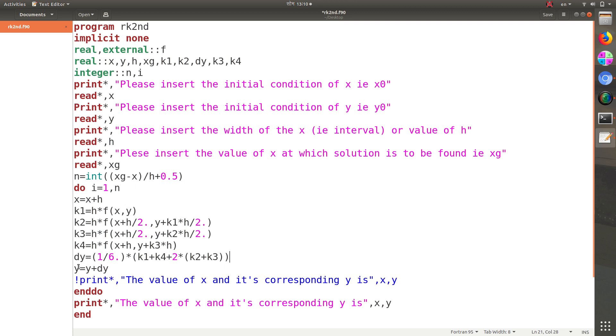Finally y equals y plus dy. k1, k2, k3, k4 is calculated, this is dy, and y equals y plus dy. This y is first the initial condition, and then dy is calculated and added, and you will get y1. Again in the second condition i will be 2, so this would be y1, this would be y2. In this formula, this is the previous y and this is the next y.